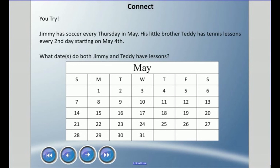Now try this one — it's not a hundred chart, it's a calendar, which is also a chart organized in rows and columns. Jimmy has soccer every Thursday in May. His little brother Teddy has tennis lessons starting every second day on May the fourth — I wrote May the fourth because it's Star Wars Day, 'May the fourth be with you.' What date or dates do both Jimmy and Teddy have lessons, so their mom has to drive to both places?